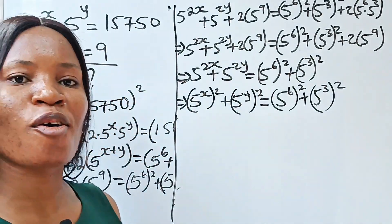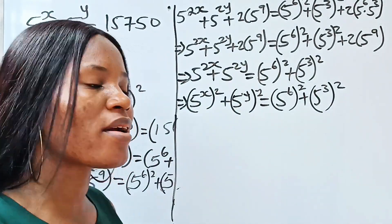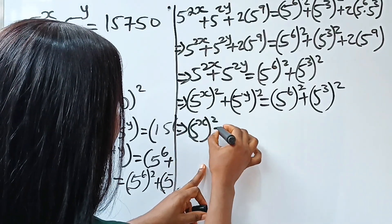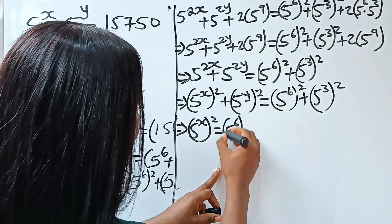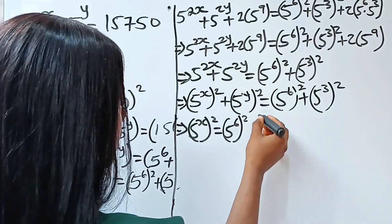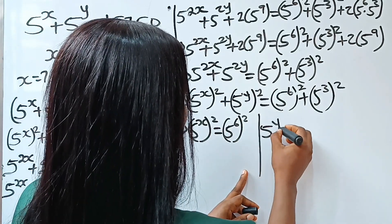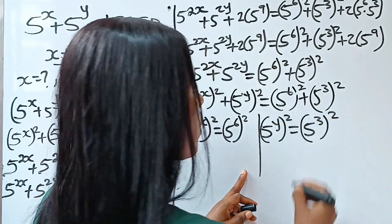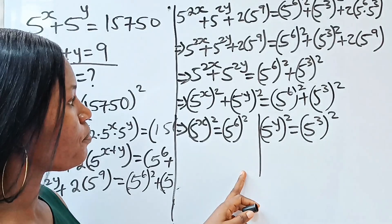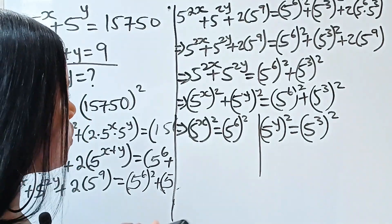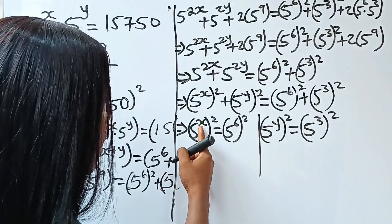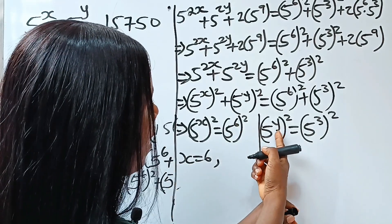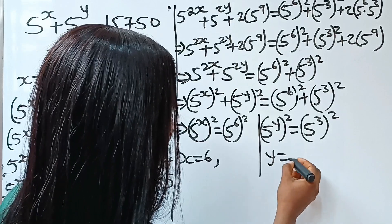Now, by comparison, we can see that 5 to the power of x squared equals 5 to the power of 6 squared, and 5 to the power of y squared equals 5 to the power of 3 squared. This means we can equate x equals 6 and y equals 3.